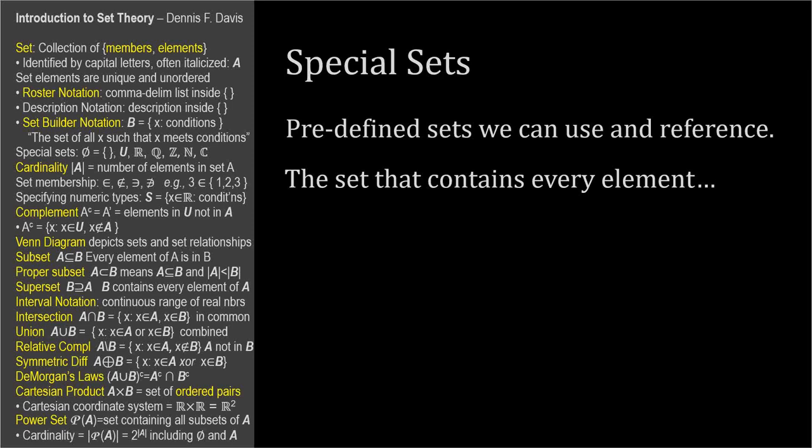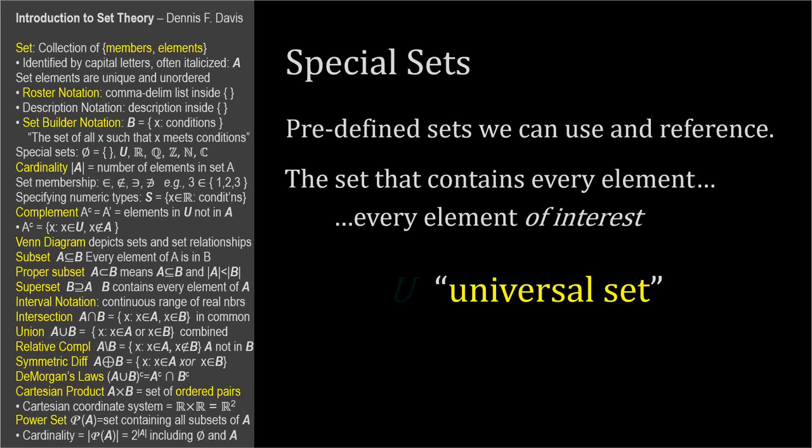Another special set is the set that contains every element. When this set is referenced, it almost always has a context that limits its scope to mean every element of interest, such as the set of all students in a school, or the set of all rational numbers, or the set of possible five-card poker hands. This set that contains every element — every element of interest — is called the universal set, and its symbol is capital U.